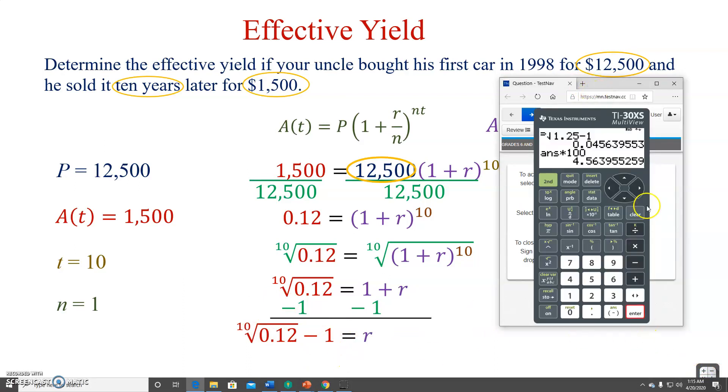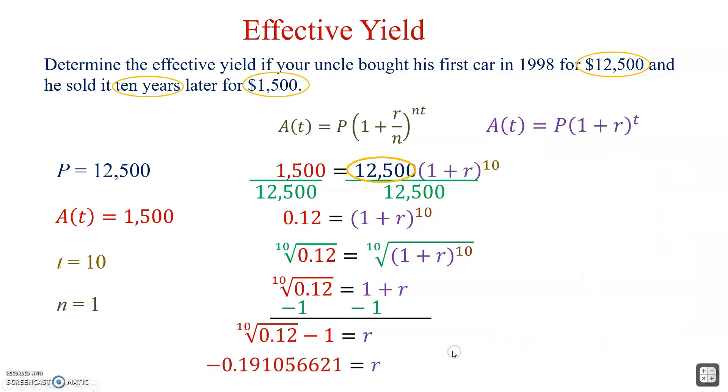Let's see what we got. We want to do the tenth root. We'll type in the root index first, 10. There's our generic radical. And we're doing 0.12. You have to move the cursor over. Minus 1. There we go. Here we have a negative amount. Which should make sense. Because he bought the car for $12,500 and sold it for a loss. So, the car didn't increase. It actually depreciated. When we multiply this by 100, we'll get negative 19.11 percentage. This is what the calculator gave us. Multiply it by 100. So, effective yield is negative 19.11%. It's a loss.